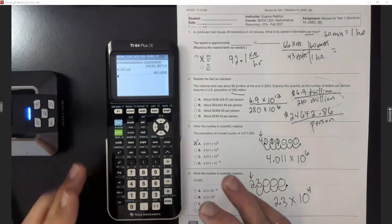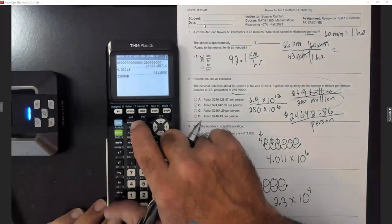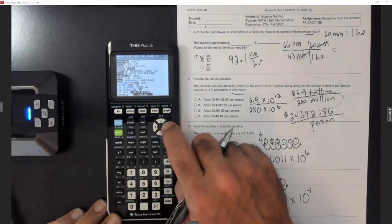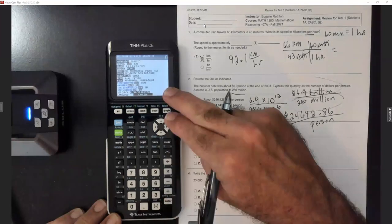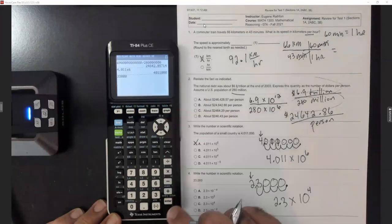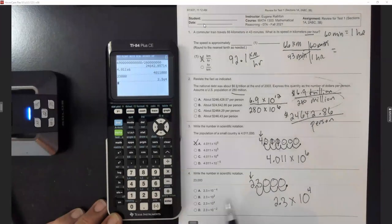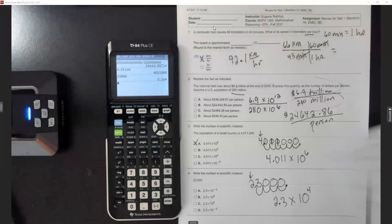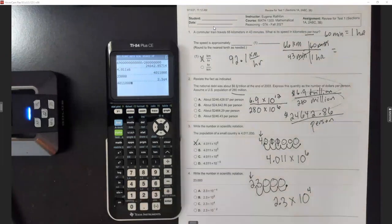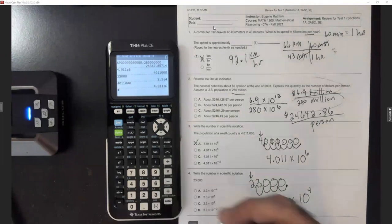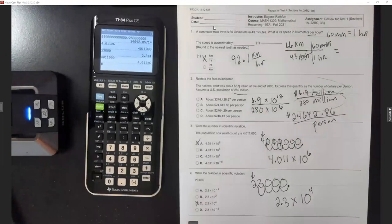The calculator can help with this. Punch in 23,000, then go to MODE, arrow right to SCI (scientific notation), and hit enter. Now when you clear the screen and punch in 23,000 and hit enter, it gives you 2.3 times 10 to the 4th. Same for 4,011,000 — punch it in while in SCI mode and it gives you 4.011 times 10 to the 6th. That calculator will convert to scientific notation really quickly.